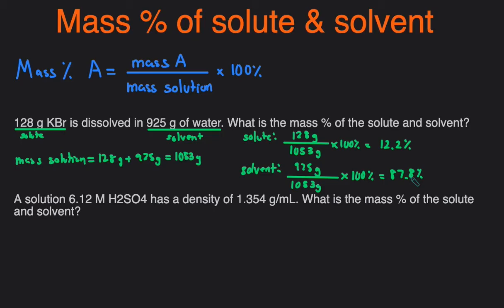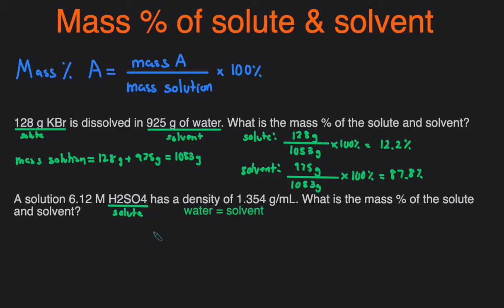For the next example, let's look at something a little more complicated involving molarity and density. We're given a solution that is 6.12 molar H₂SO₄ (sulfuric acid) and it has a density of 1.354 grams per milliliter, and it's asking us for the mass percent of the solute and the solvent. H₂SO₄ is going to be the solute, and the solvent — though not mentioned — is going to be water. So let's write out the molarity: molarity is moles per liter, so 6.12 molar H₂SO₄ is 6.12 moles of H₂SO₄ per one liter of solution.